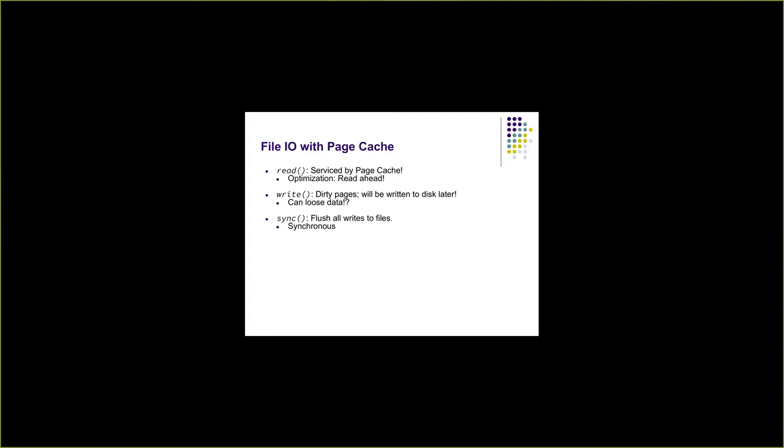It also allows the operating system to do certain optimizations where it can read ahead certain blocks from the disk and put them in page cache so that applications can be faster. For writes, the operating system no longer needs to worry about writing every write to the disk, because an application when it opens a file would write many times before closing it. Page cache allows the operating system to provide amazing write performance — writes are as if you're writing to memory, not to the disk.